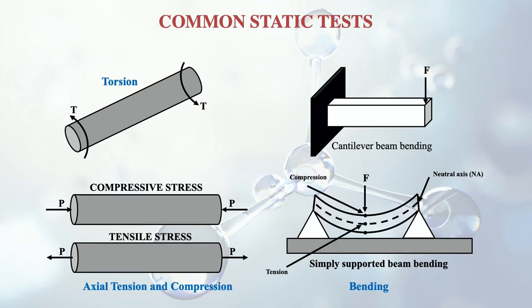Here are visual representations to help you understand better. The first shows axial tension and compression — compression is the push effect and tension is the pull effect. The second figure shows torsion, where a twisting effect occurs. The third shows bending, where the load acts perpendicular to the beam or specimen.